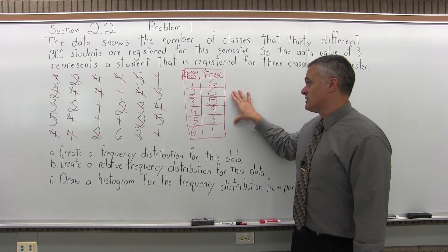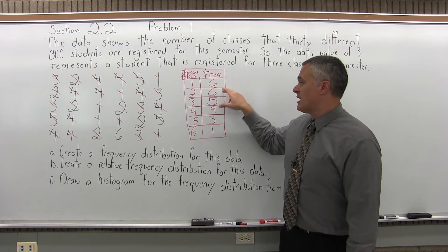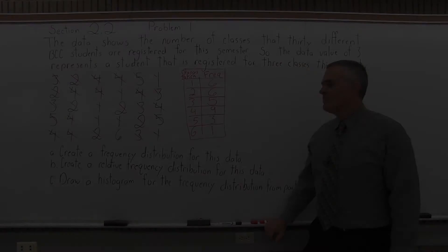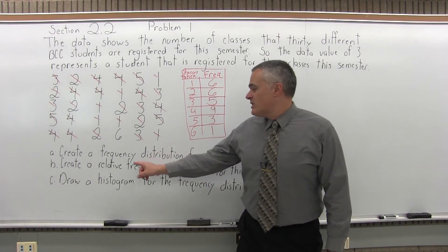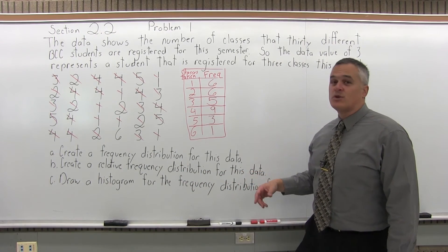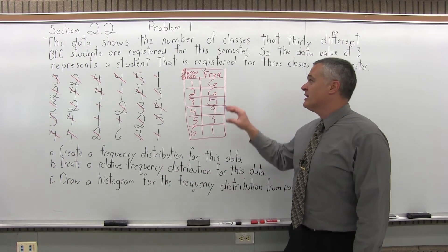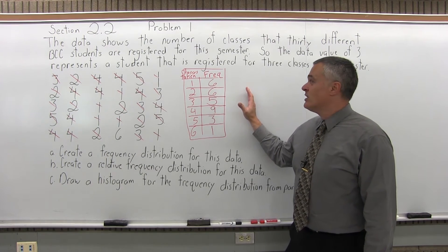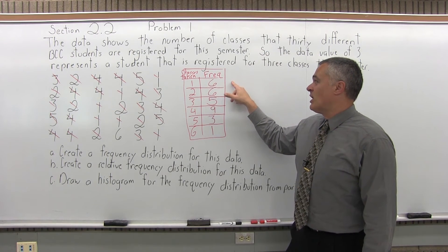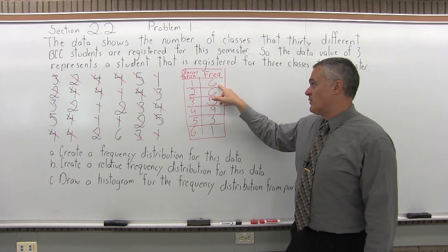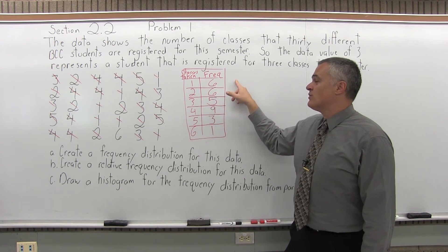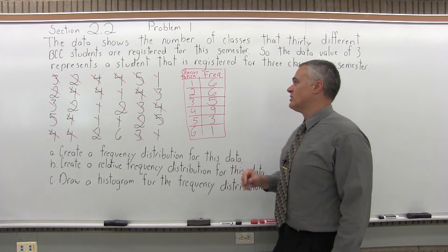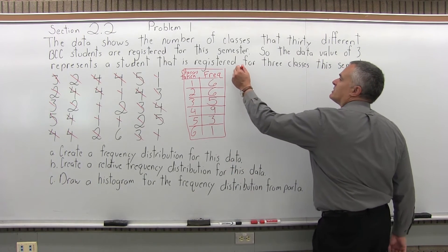So this would be the frequency distribution — these are how many occurrences of each of the values in the first column. That's Part A. Part B says create a relative frequency distribution for this data. For a relative frequency distribution, it's the same chart essentially with one extra column on the end, where you make a ratio of the frequency for that class over the total of all the frequencies. We know the total should be 30.